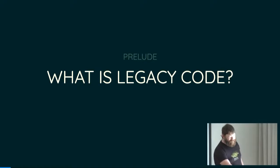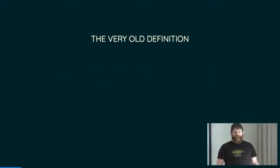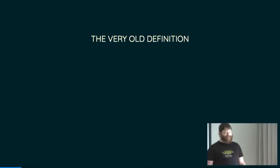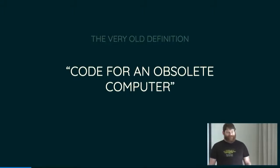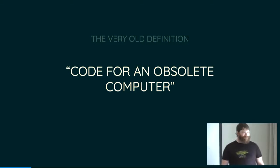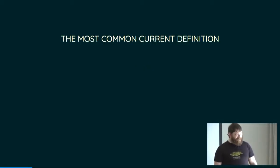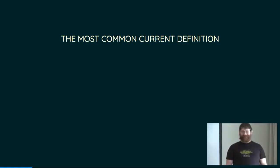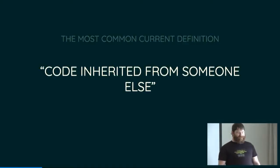When I was looking in Wikipedia for some definitions, I found what Wikipedia claims is the original definition, the very first one: code for an obsolete computer. I have a program written for a PDP-6. I have replaced it with a VAX. Now I need to write all my software again from scratch because the computer is different. Most of us don't deal with that kind of legacy code, thank goodness. The current definition that I see most often, and the one that I usually get if I ask someone what legacy code is, is code that is inherited from someone else.